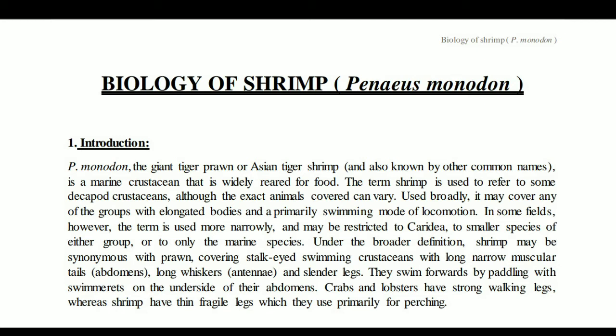The term 'shrimp' here refers to animals that primarily use swimming mode of locomotion — not those with a narrow body shape or restricted to small species or certain groups. Under the broader definition, shrimp may be synonymous with prawn, covering stalked-eyed swimming crustaceans. Note that one animal can have more than two or three names with different meanings — for example, 'prawns' is another term used.